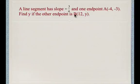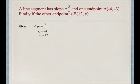We don't know what the y-coordinate is for the other endpoint. So what we have to do is write down what we're given. We're given that the slope is 3 over 4, x₁ is negative 4, and x₂ is 12. So here's our x₂, and here's our x₁.